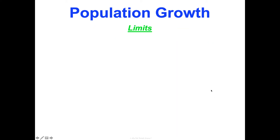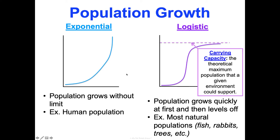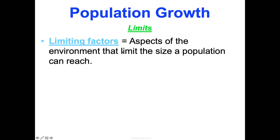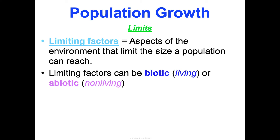What limits the growth of a population and creates a carrying capacity? These are called limiting factors — any aspect of the environment that can limit the size a population can reach. We categorize them as biotic (living) or abiotic (non-living). Biotic examples include competition, predation, and bacterial disease. Abiotic examples include climate events, natural disasters, and flooding — things that can limit a population's growth.